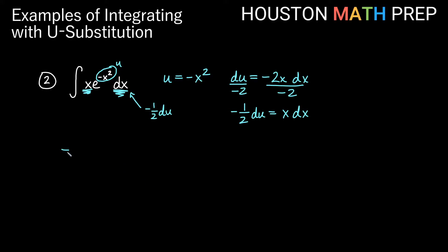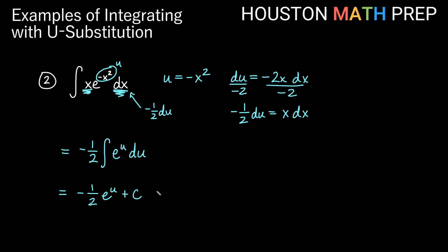So this x dx part gets replaced with negative 1/2 du. I'll bump my negative 1/2 out front of the integral as a constant multiple. So we have negative 1/2 times the integral of e to the u du. We know the antiderivative of e to the u is just itself, so we get negative 1/2 e to the u plus our constant of integration. Then we replace u back in terms of x: our u was negative x squared, so the answer is negative 1/2 e to the negative x squared plus C.